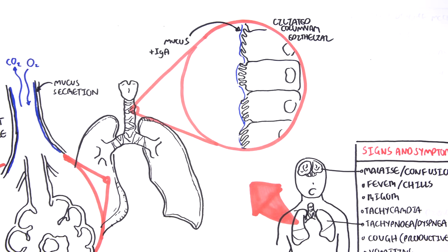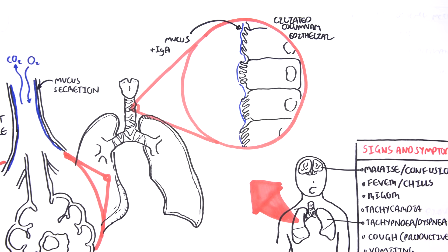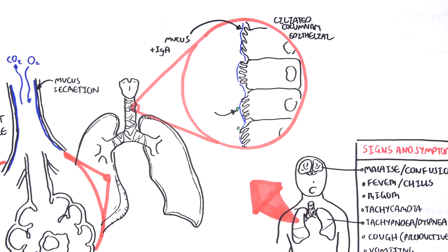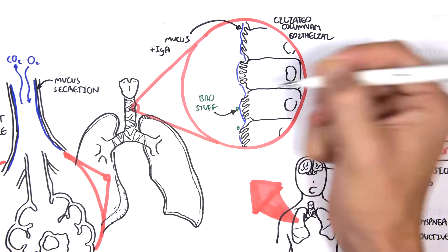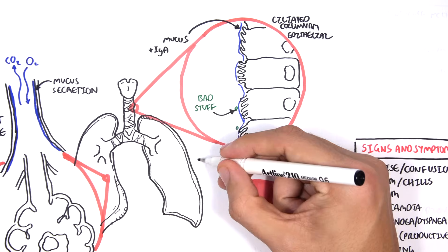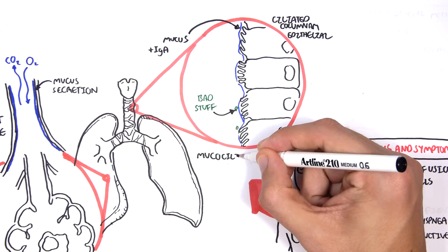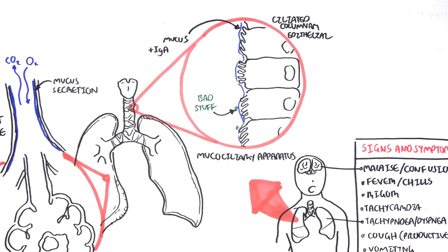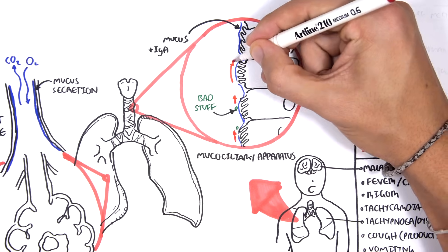IgA antibodies are part of the mucosal immune system. Now interestingly, the ciliated epithelial cells actually are special because they make up what's called the mucociliary escalator. So what they do is essentially the bad stuff can be brushed up like so through the use of the mucociliary escalator.